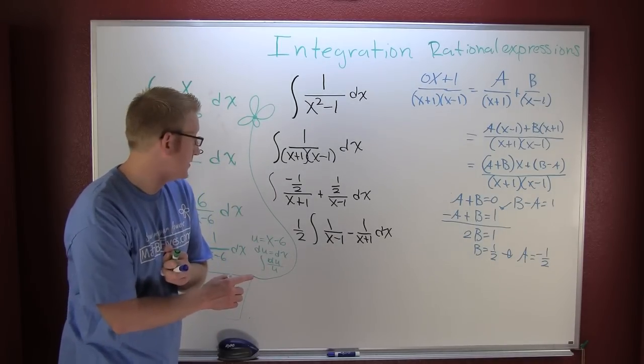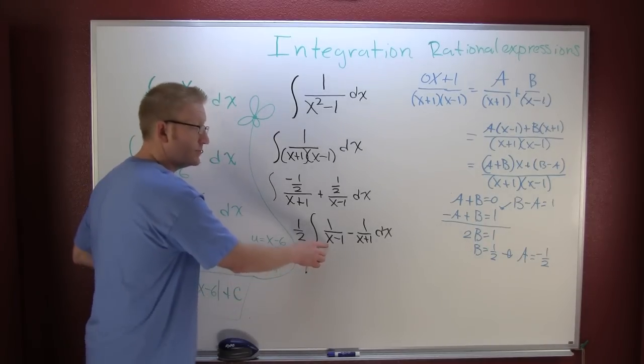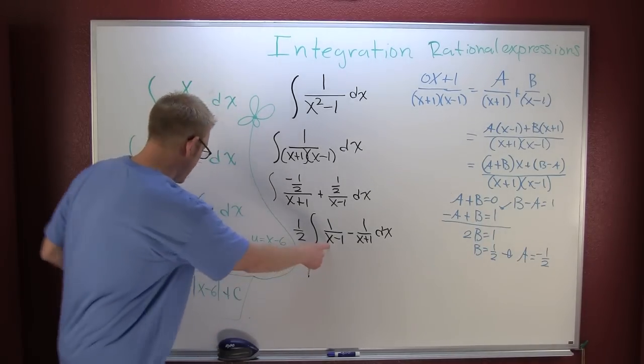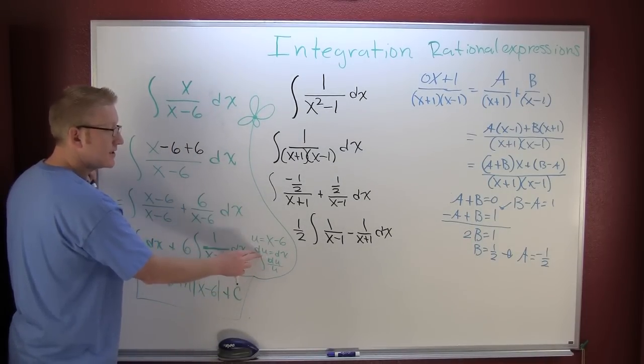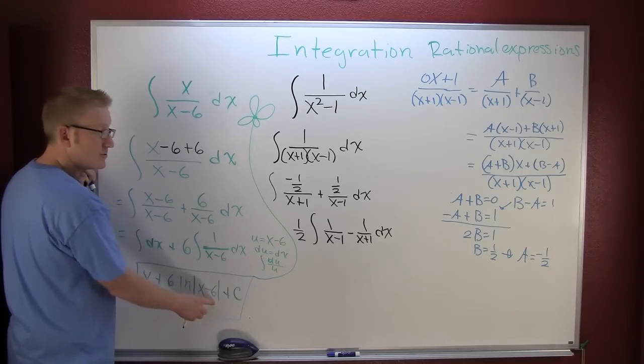And remember, this is a video, you can pause it so you can work it out and check me. So now I need to integrate each one of these guys. So in the spirit of this guy, I'm going to let u be the denominator, then du is going to be dx. And then I'm going to be integrating du over u.